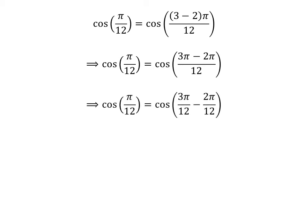The fraction pi upon 12 can be expressed as the difference of two fractions: 3 times pi upon 12 and 2 times pi upon 12. Cancelling out the common factor in the numerator and denominator gives us cosine of pi upon 12 is equal to cosine of pi upon 4 minus pi upon 6.